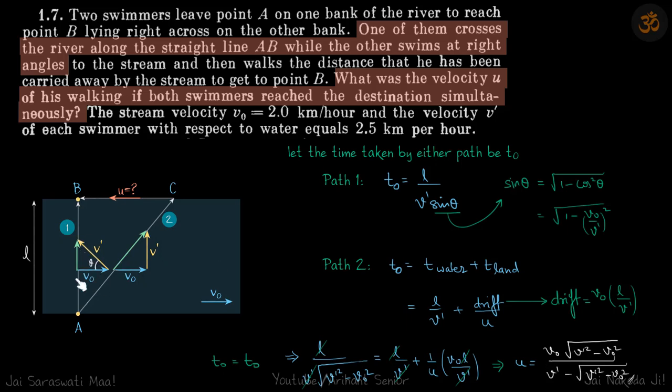So once more, what we did is for AB path, the time taken was L upon V dash sine theta and value of theta we could get by cos theta is equal to V0 by V dash. In second case the time taken to swim across is length upon V dash and time taken to walk is drift which is time taken to swim into V0 divided by U.